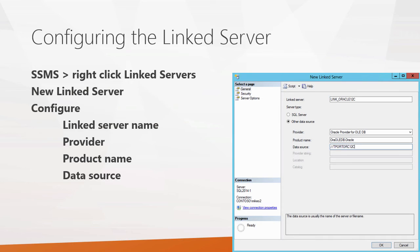In the Provider drop-down box, select the Oracle Provider for OLE DB. That won't be present until you've installed the Oracle data access components on your SQL Server system. Give it a product name — I used the name of the provider itself — and then give it a data source. Oracle uses something called Easy Connect, which gives you a string where you can supply the server name or IP address. Optionally, you can also add the port and the service name, but since those are optional I left them off for a simpler example.